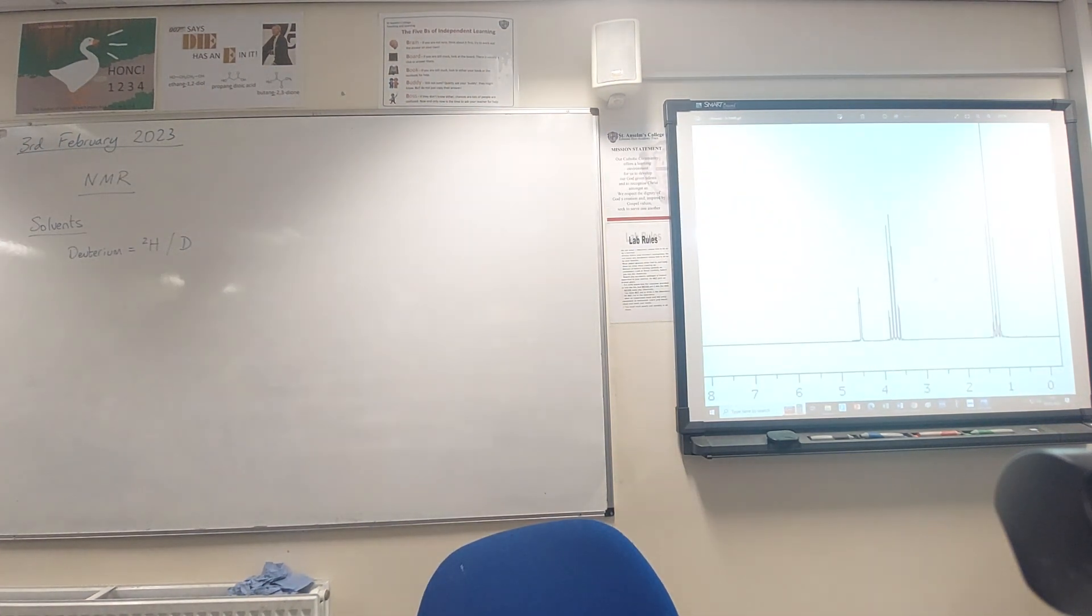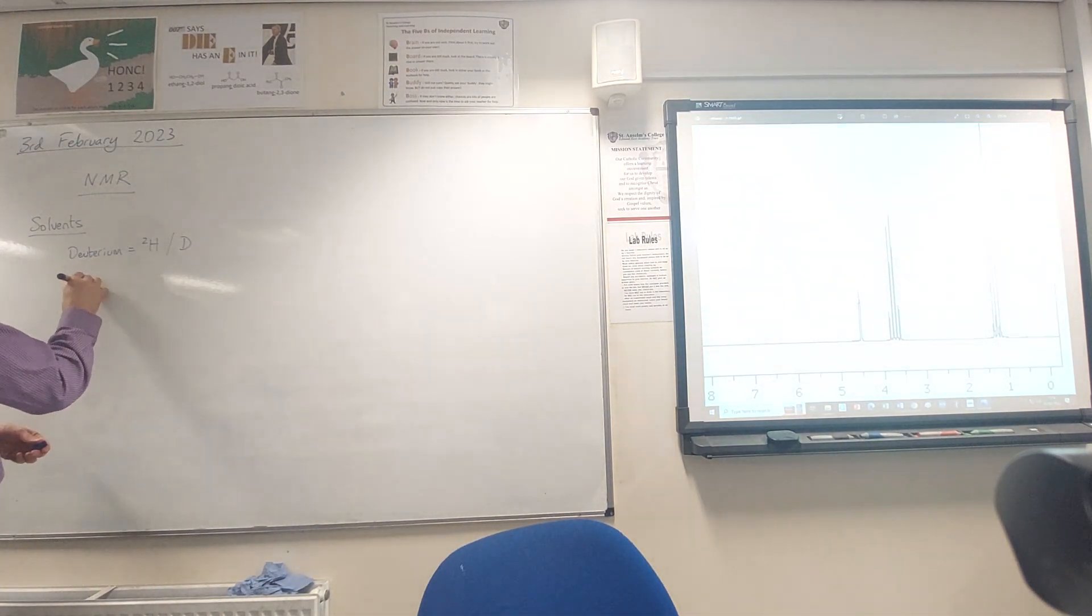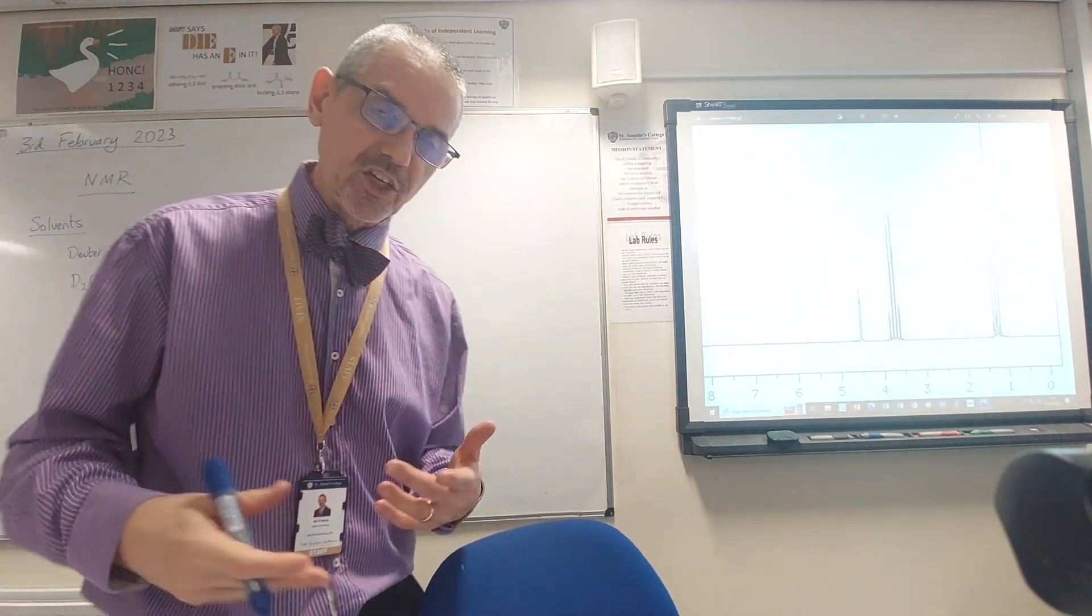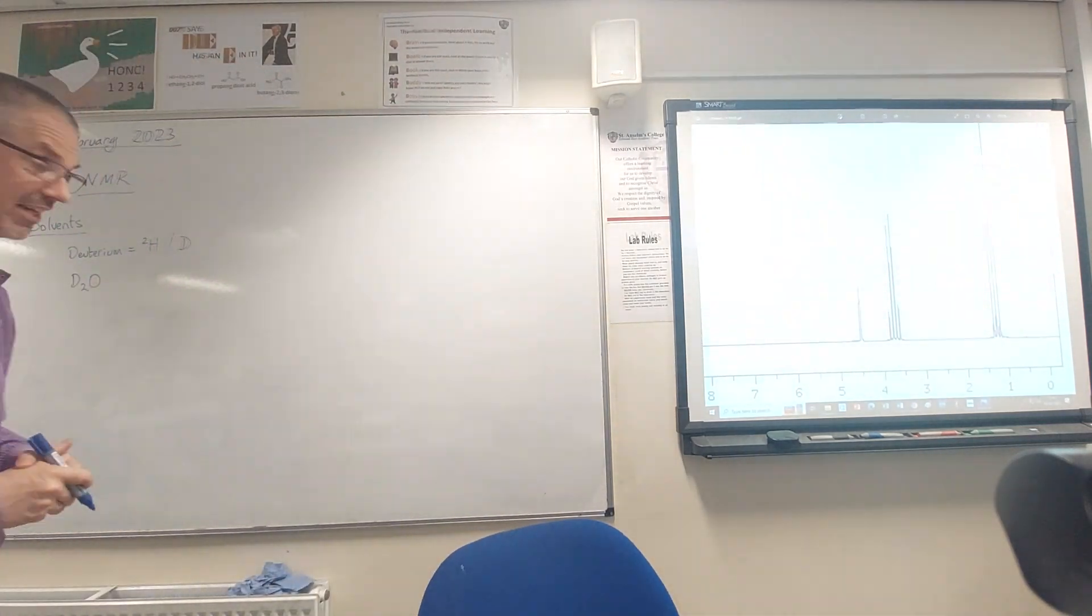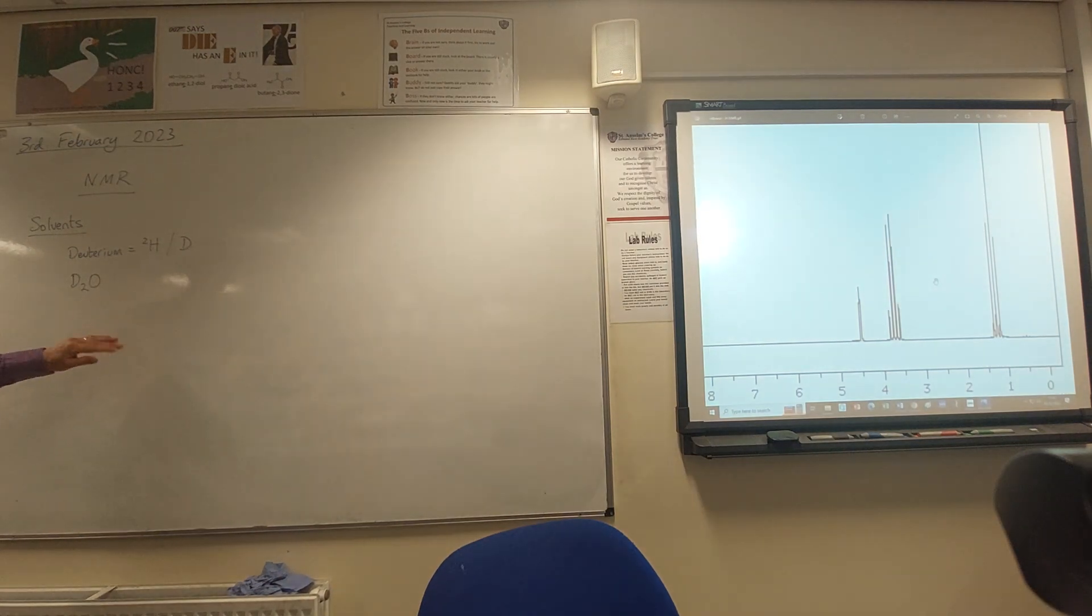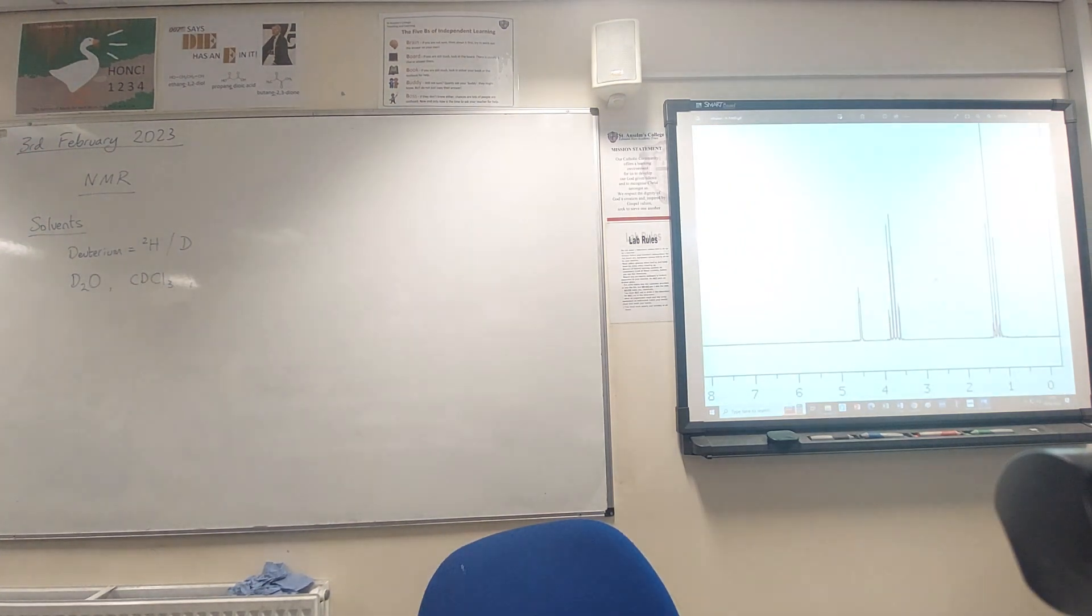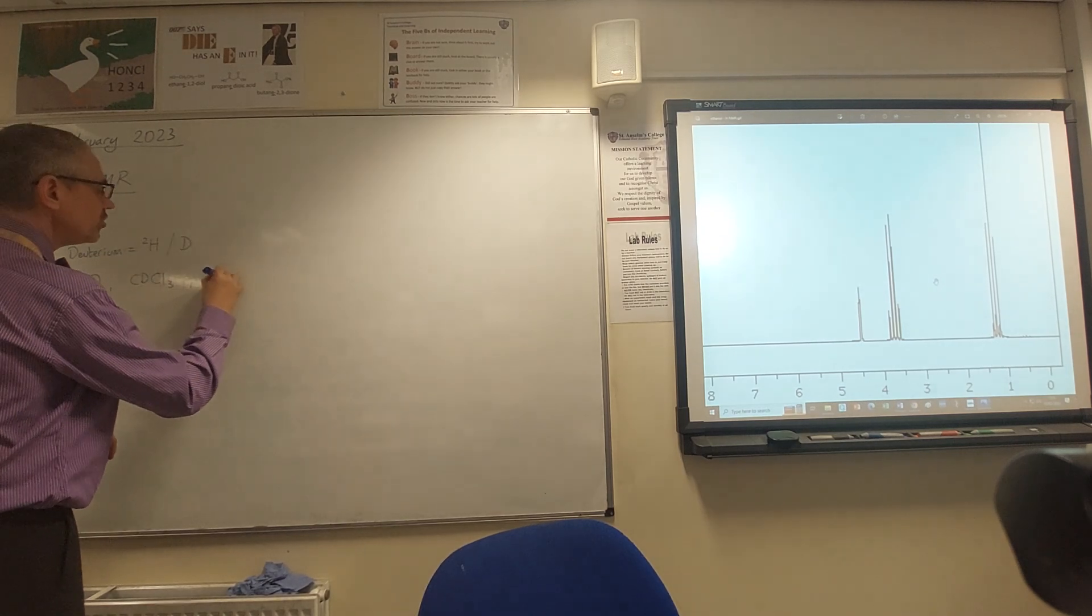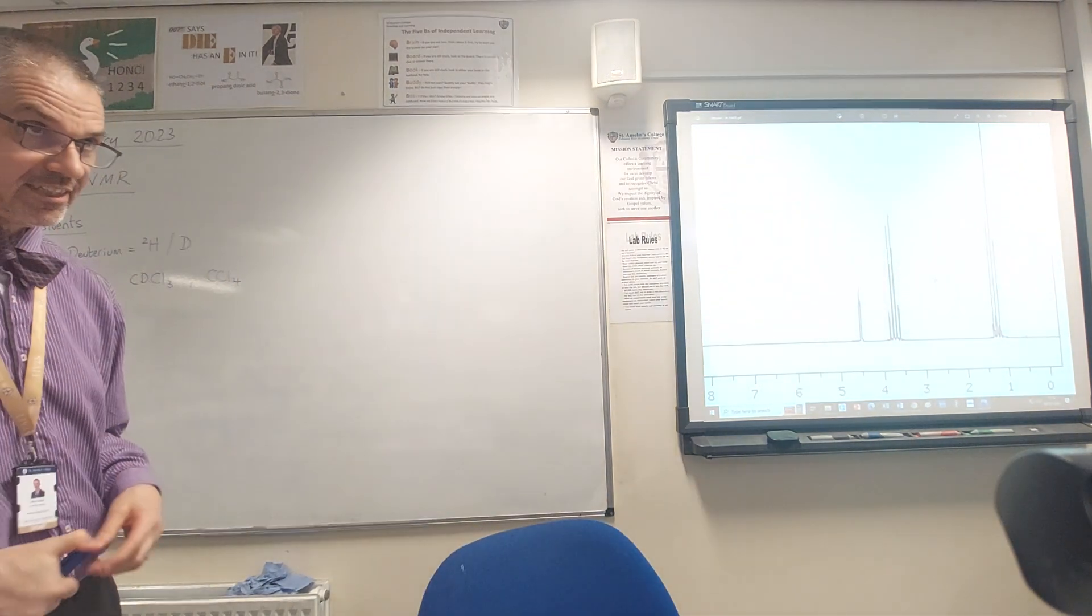The symbol for deuterium as well as hydrogen-2 is sometimes just written D. So if we had D2O, that being the deuterated version of water, sometimes referred to as heavy water because it's got a formula mass of 20 instead of 18, D2O would work as a solvent as does CDCl3, the deuterated version of trichloromethane. Or you could just use a solvent like CCl4 that doesn't have any hydrogens in it anyway.